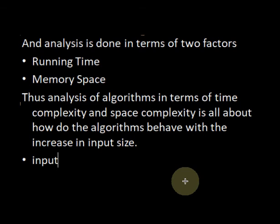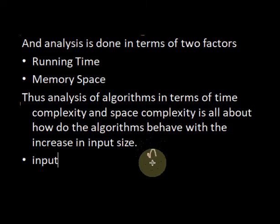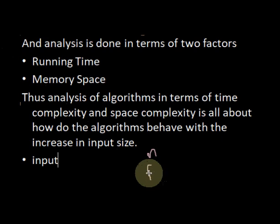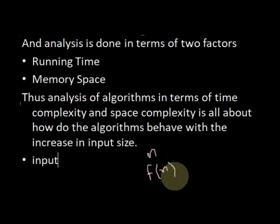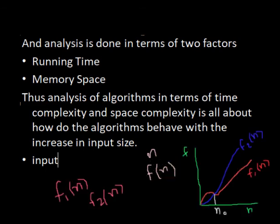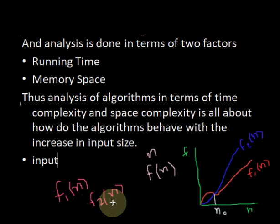Let n be the size of the input. The running time or time complexity of the algorithm is calculated as a function f of n, where n is the size of the input. Let f1(n) be the running time of algorithm 1, and f2(n) be the running time of algorithm 2, where n is the input size. A graph is plotted in which f is a function with respect to n.